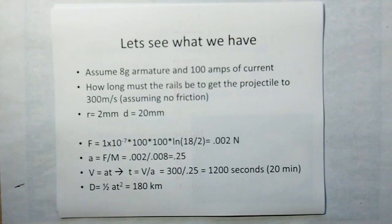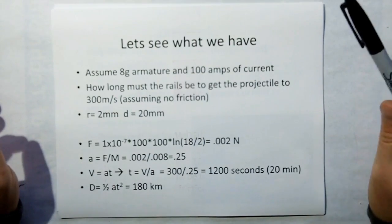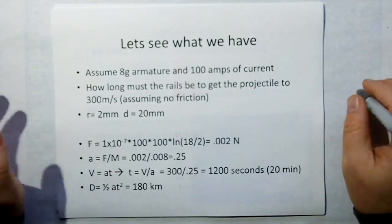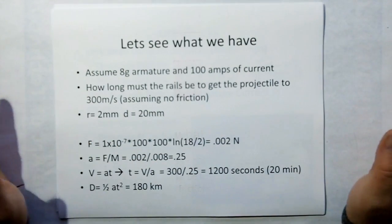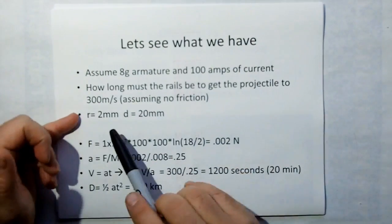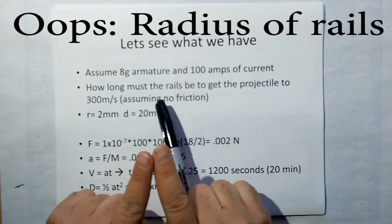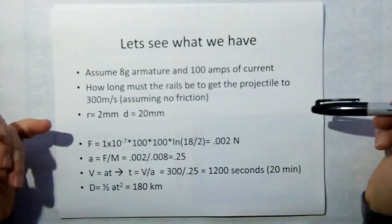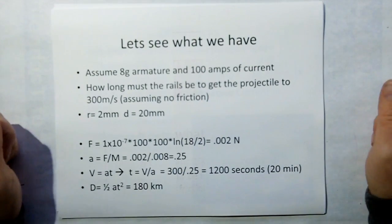So let's just see what we have. Assume we have an 8-gram armature. And just pick 100 amps. I just picked that pretty arbitrarily of current. How long must the rails be to get the projectile up to 300 meters per second, assuming that there's no friction at all? This is just a back-of-the-napkin calculation. We're going to use a diameter of the rails of 2 millimeters and the diameter of the distance between the rails of 20 millimeters.